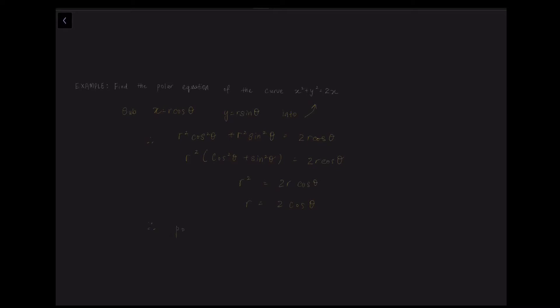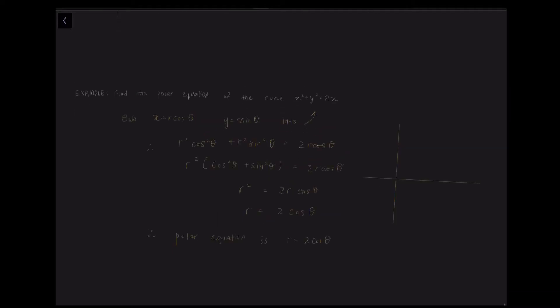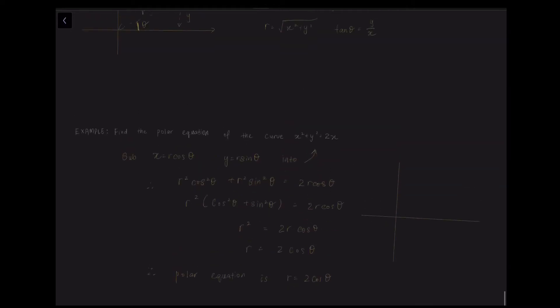We cancel R on both sides and get R equals 2 cos Theta as the polar representation of the Cartesian equation. So the polar equation of the given curve is R equals 2 cos Theta. This curve is a circle on the X axis with a diameter of 2 units. We'll look into more details later.